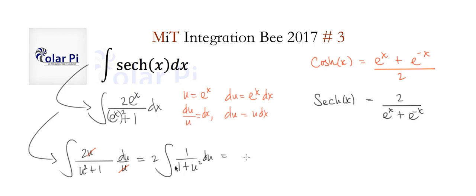It's arctan u, so our final answer is 2 arctan u plus c. Arctan is the same as tan inverse. Since u is e to the x, we write 2 tan inverse e to the x plus c. That is that, take care.